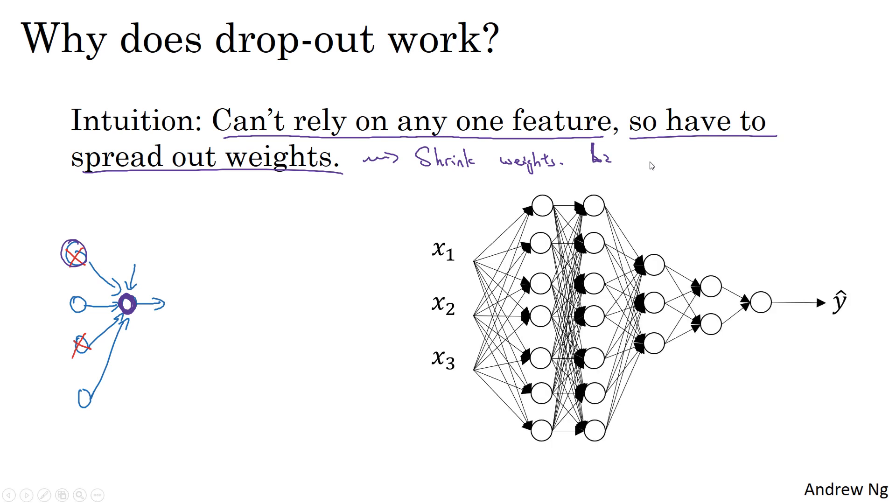One more detail for when you're implementing dropout. Here's a network where you have three input features. This is seven hidden units here, seven, three, two, one.